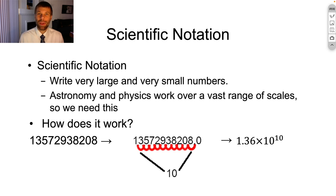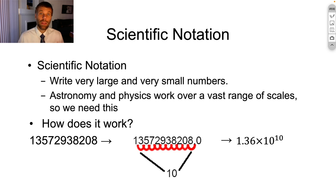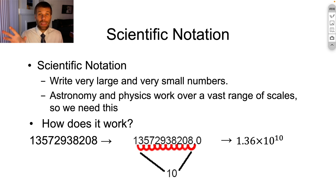Our first topic is scientific notation. Scientific notation is a really useful tool in the scientists' and engineers' toolbox that lets us write either very large or very small numbers in a compact way. This has a number of important benefits — it means that we can drop off insignificant digits, junk digits that are produced by our instrumentation.